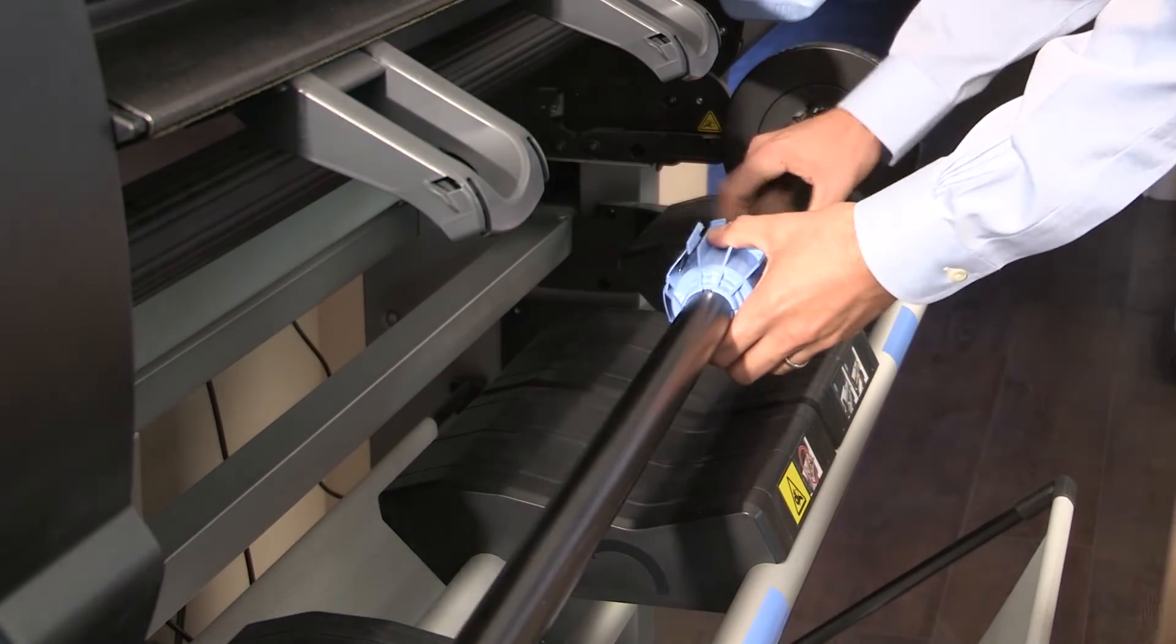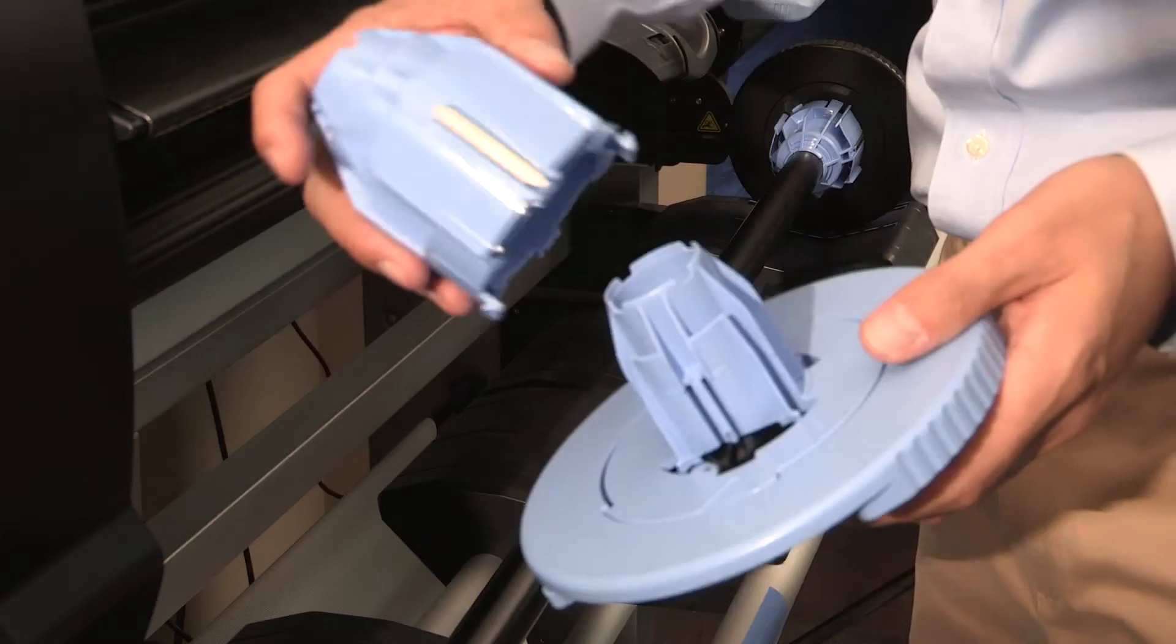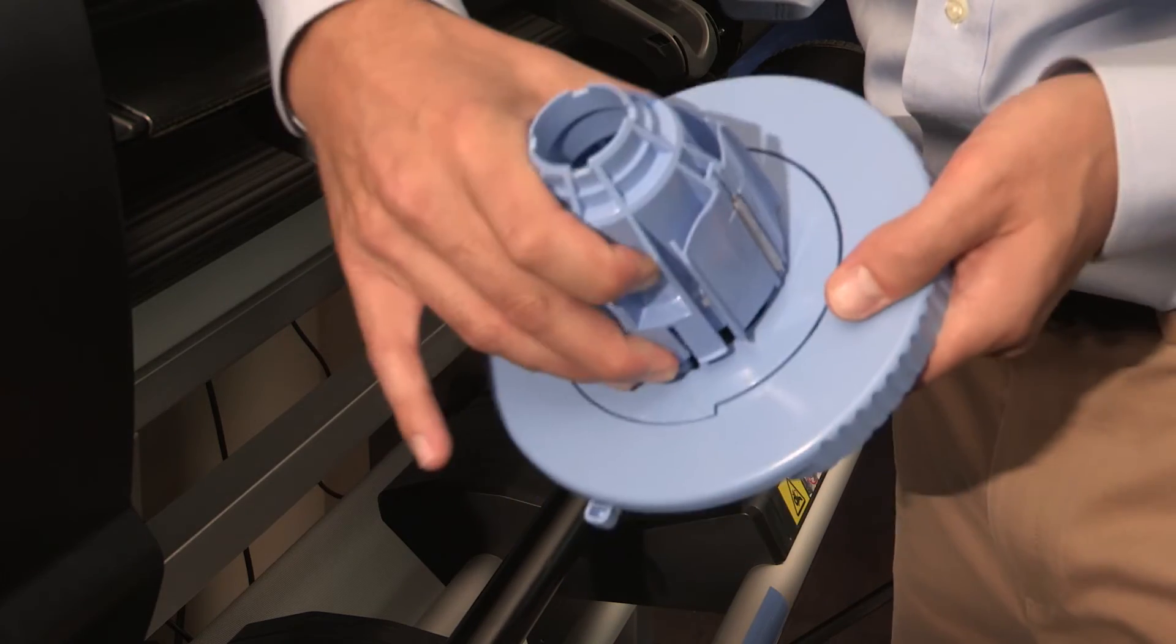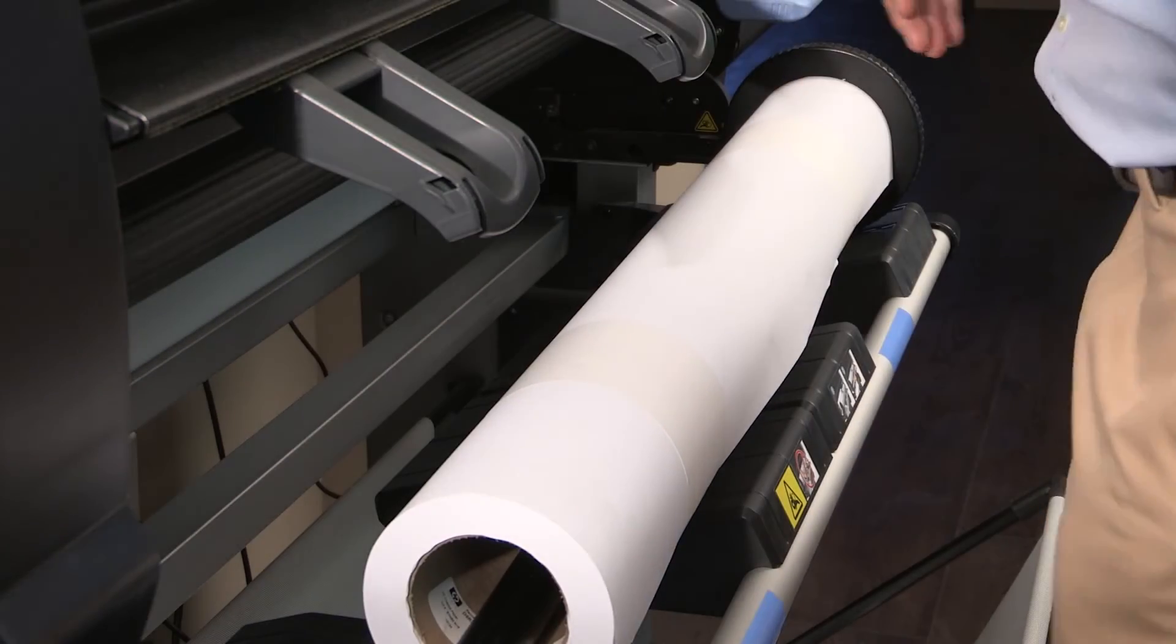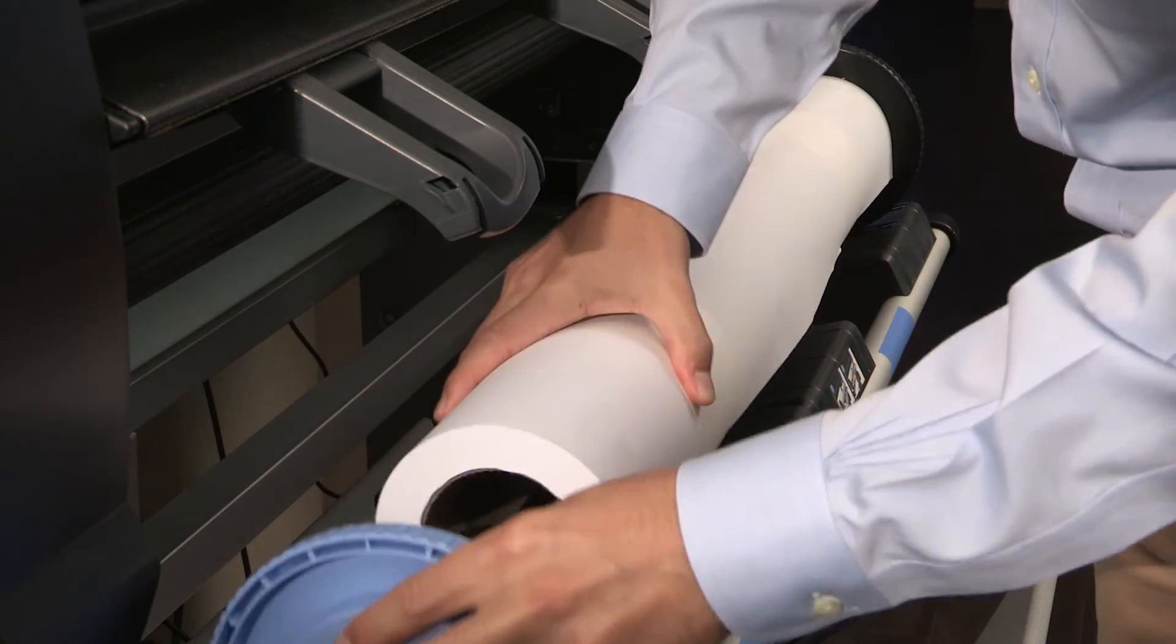Simply slide one onto the spindle and then lock it into place on the spindle hub. Then do the same with the other spindle hub. Load your roll of media onto the spindle and into the printer as you normally would.